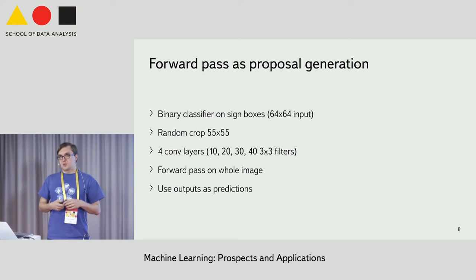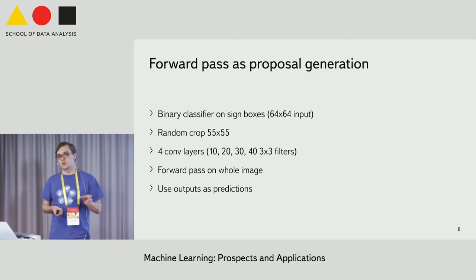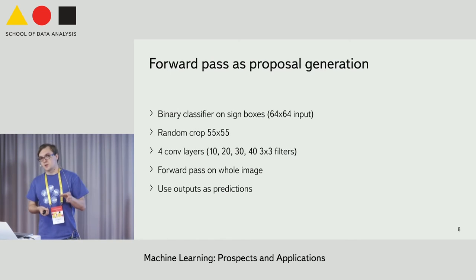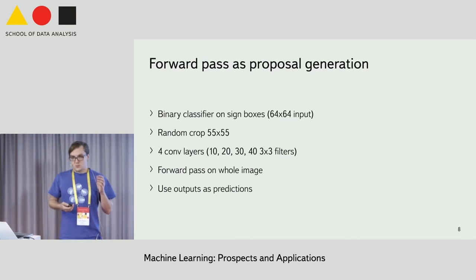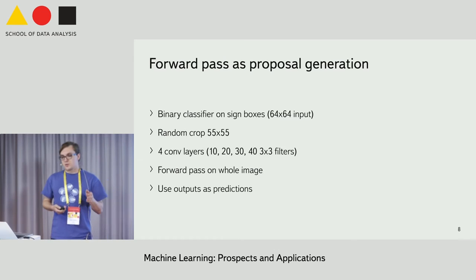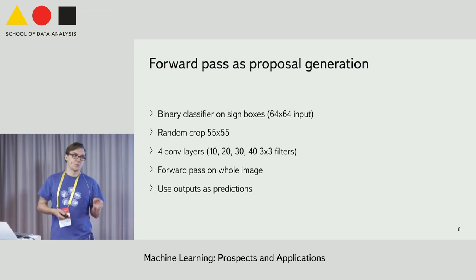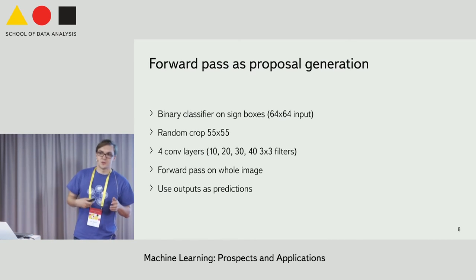First, we learn a binary classifier on small image patches cropped from the original image. The output of the classifier is either object or non-object. The classifier is a neural network consisting of four convolutional layers with small 3x3 filters. We use only convolutional layers so we can apply it to arbitrarily sized images.